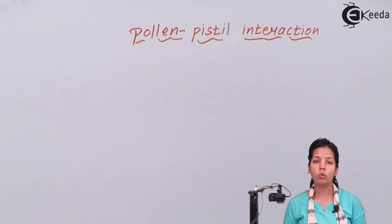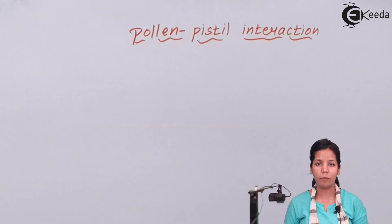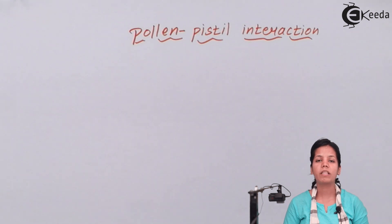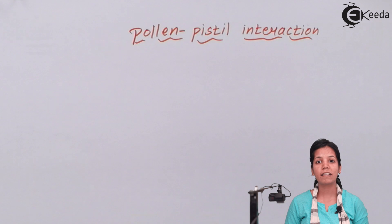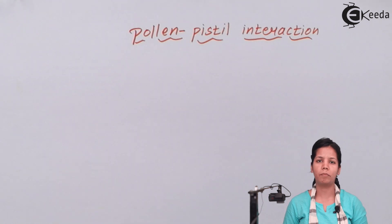Whenever pollen grain goes through the stigma — the hollow passage — a large number of pollen grains pass through. There is a narrow passage through which a sugary substance is produced, and the pollen grain comes into contact with this sugary substance and glides toward the egg or the female gametophyte. The ability of the stigma or pistil to accept or reject a pollen grain due to continuous interactions between pollen and the pistil is pollen-pistil interaction.